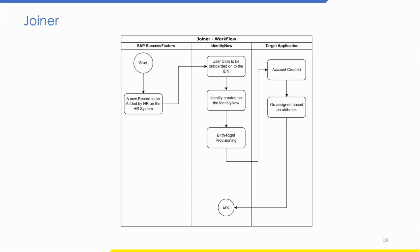In the joiner use case, a new record will be added in the SAP SuccessFactors system by the HR team. Once the new record is added, account details will be fetched into IdentityNow via account aggregation. Once all details are fetched, an identity will be created in IdentityNow. Once the identity is created, birthright access will be given — meaning basic access such as Office 365, VPN access, etc. Once birthright provisioning is done, the account will be created in the target applications. This also covers preparing assets such as a laptop, headphones, etc. Once the account is created, an OU is assigned to that user in the target application.